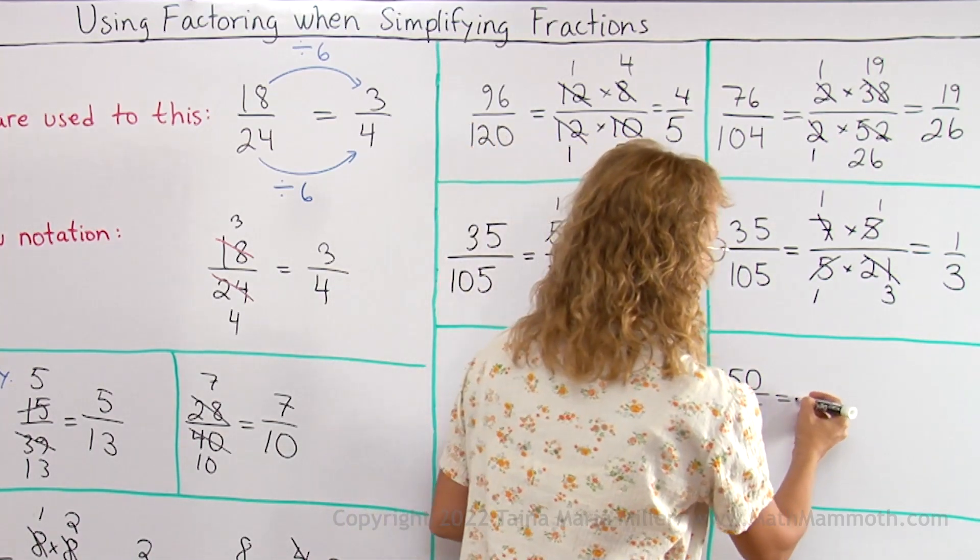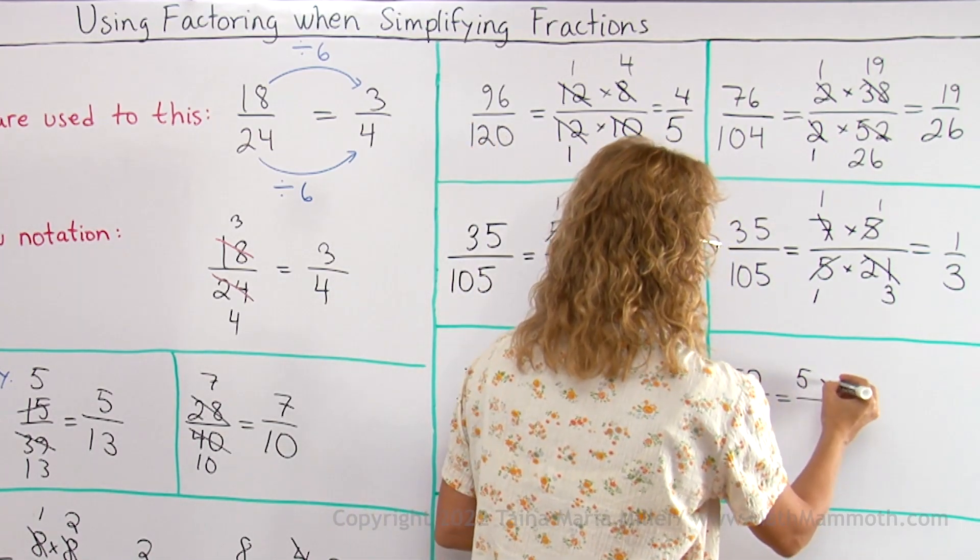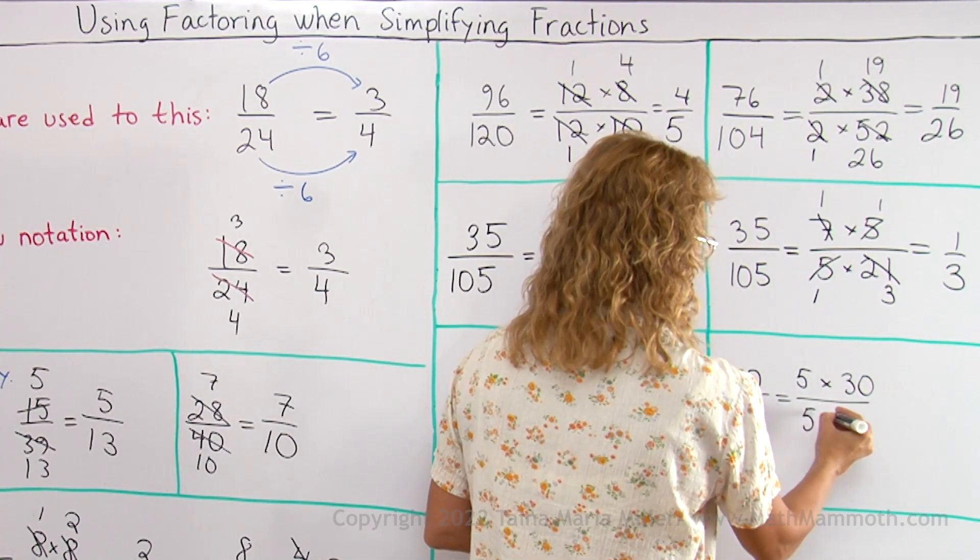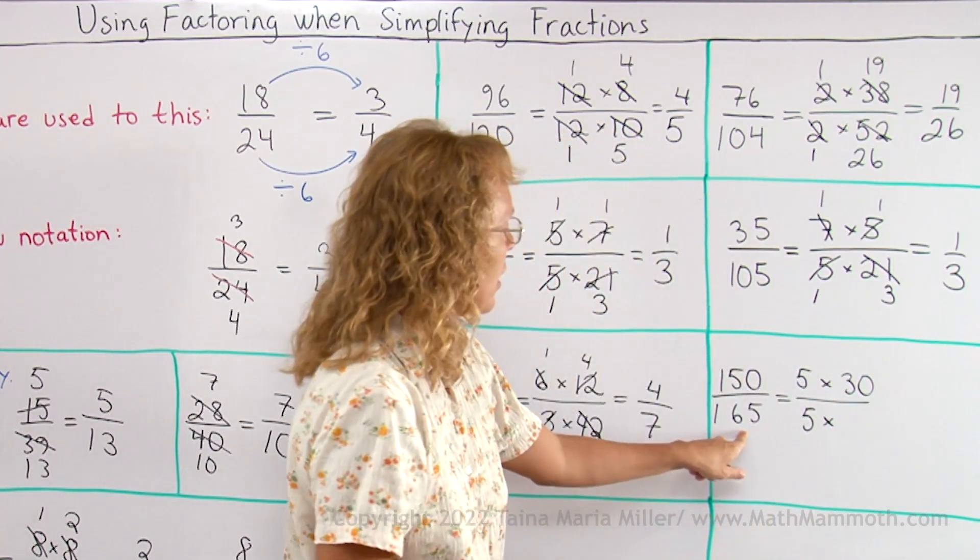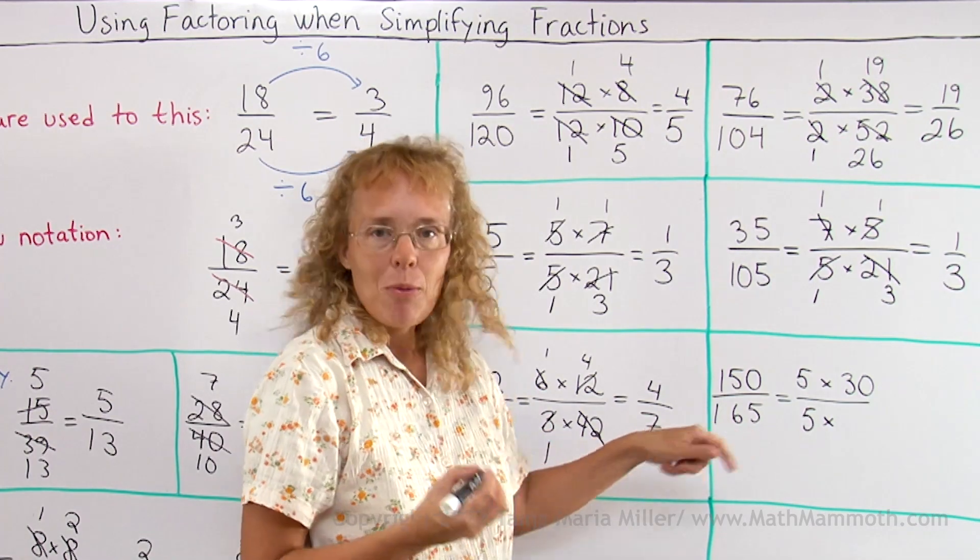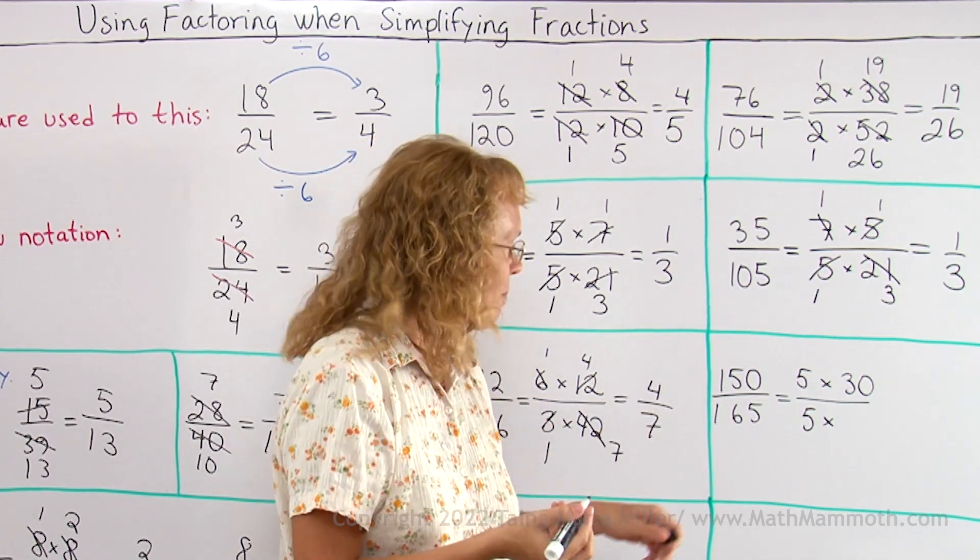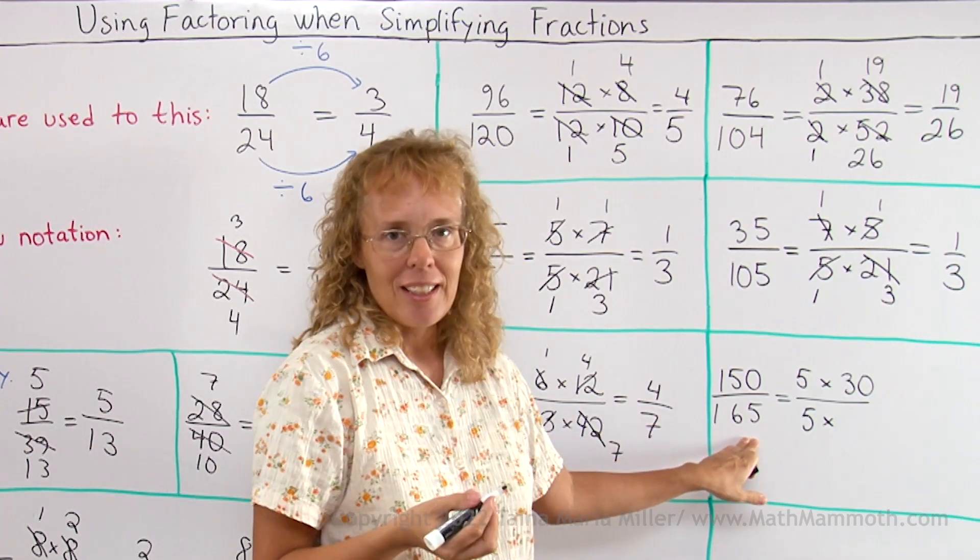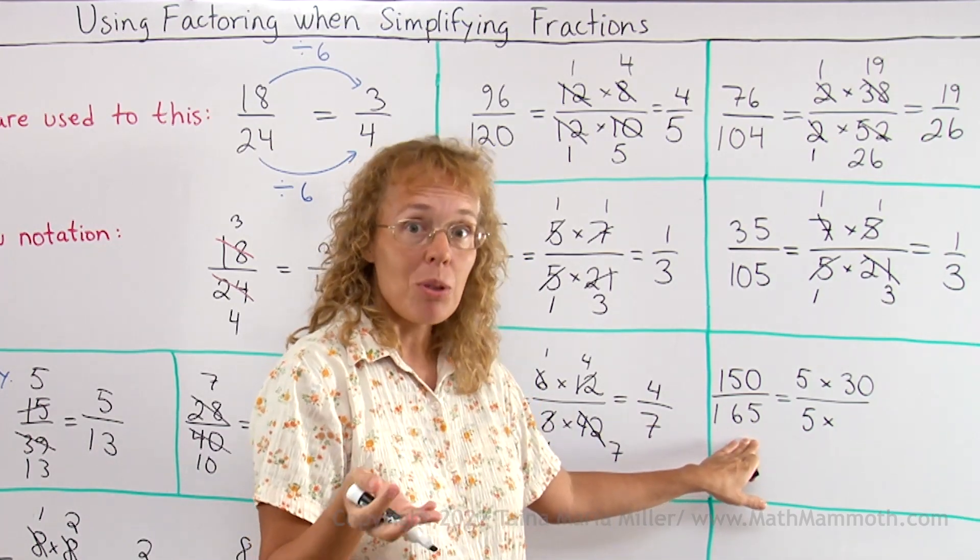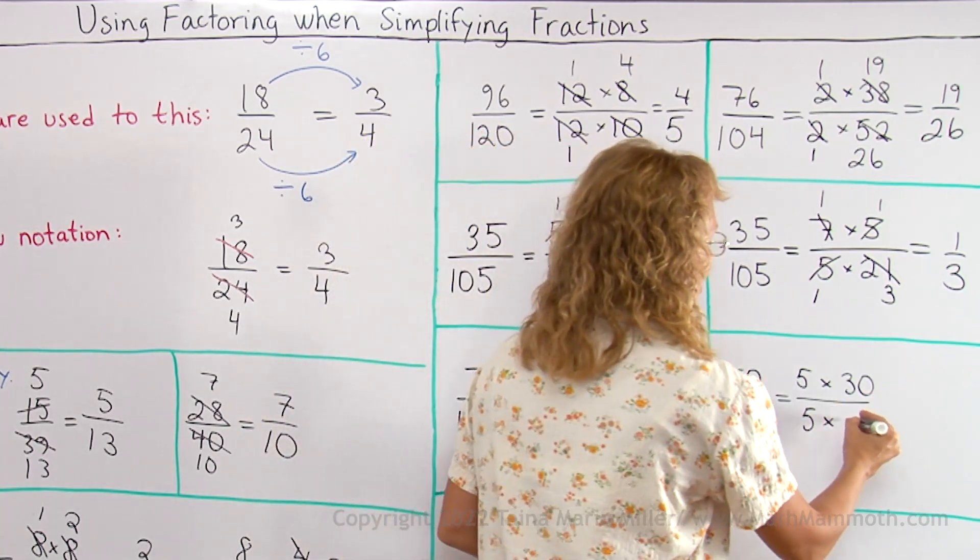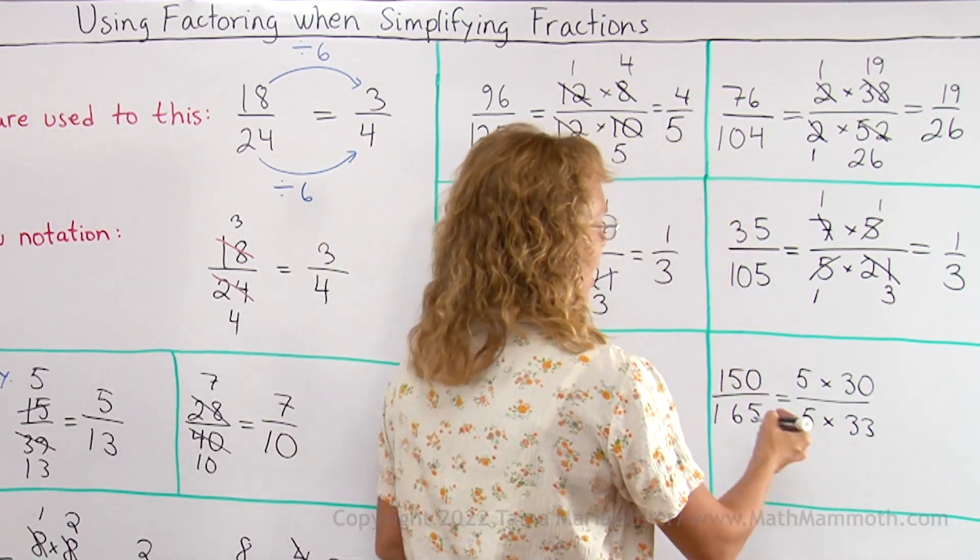Both of these are divisible by 5, so let's write them as 5 times something. 5 times 30. 150 is 5 times 30, 30 times 5. This is 15 more than that, so it is 3 fives more than 100. So it is 33.